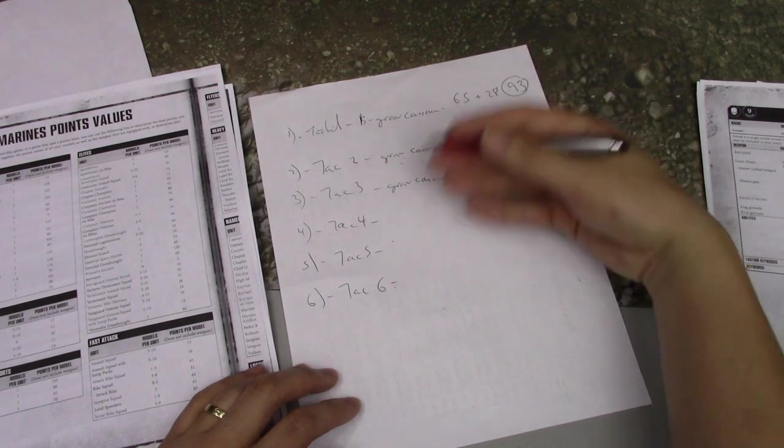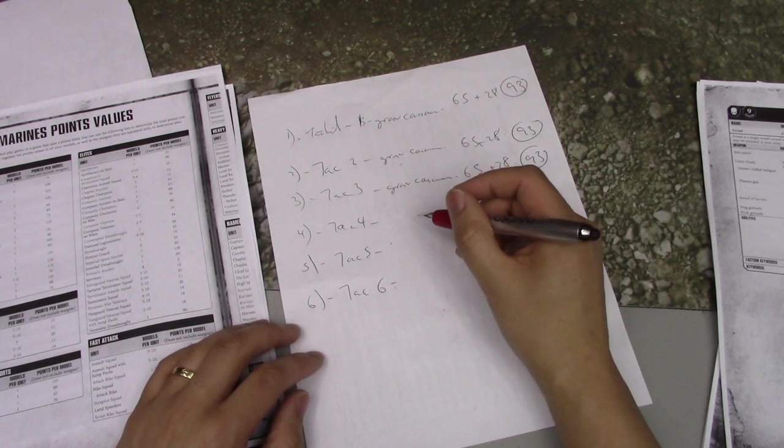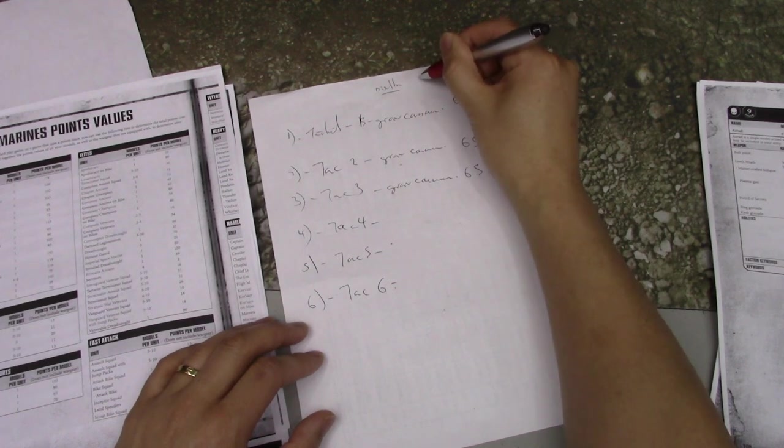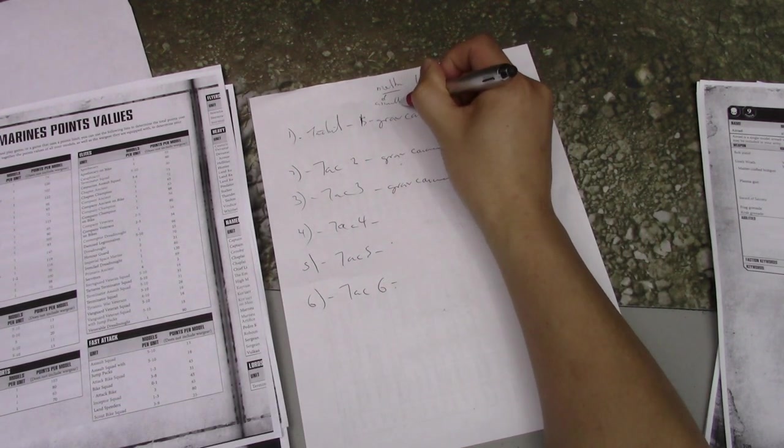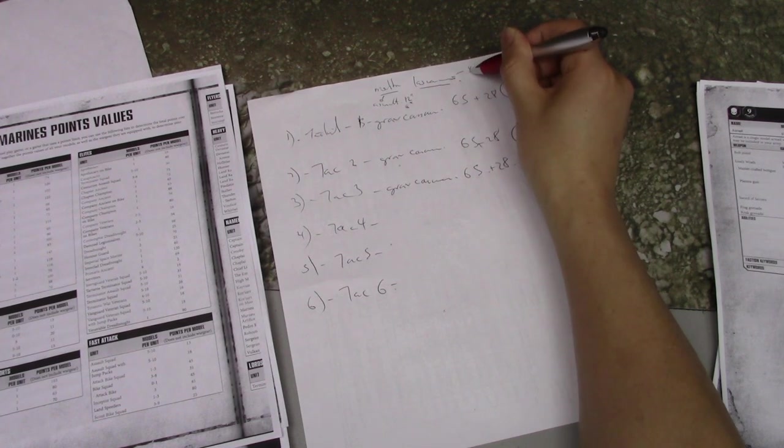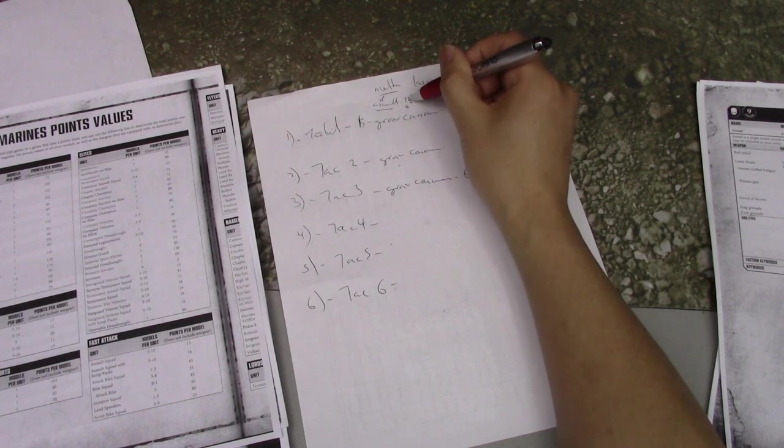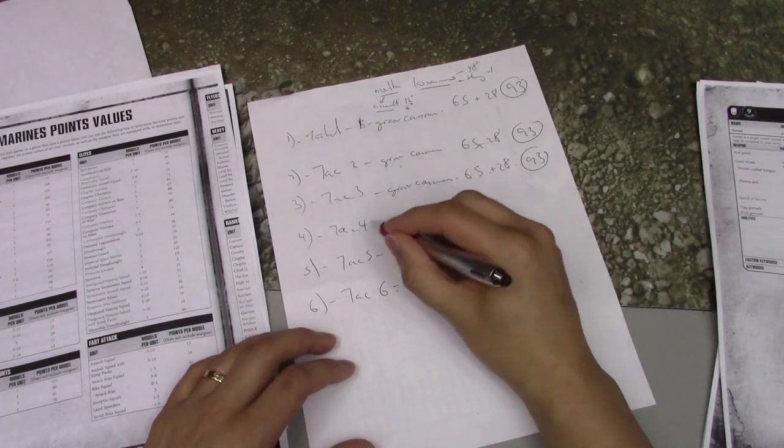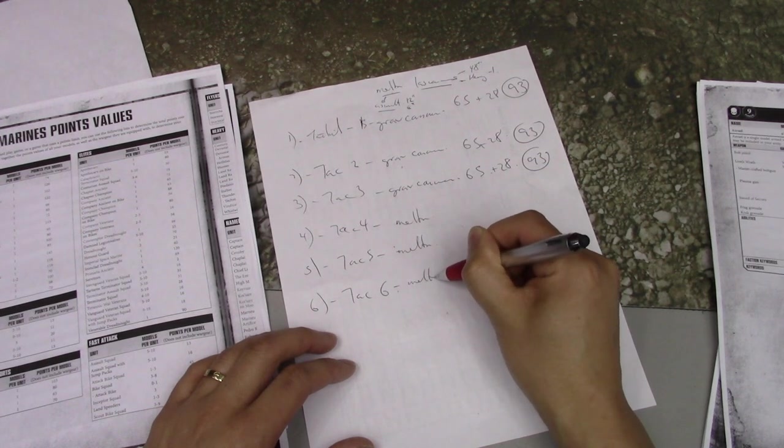That kind of is mostly chaff killing, but it has flexibility to put damage onto vehicles and knights. So what I want also is the ability to pop vehicles and knights. The two options here really for focused power are Melta and lascannons. The difference is Melta's an assault weapon, so I can advance and still shoot it, but it's only 12 inch range. In fact, the Melta effect is only six inch range. Lascannons have 48 inch range, so they can really reach out and touch somebody, but they're heavy.